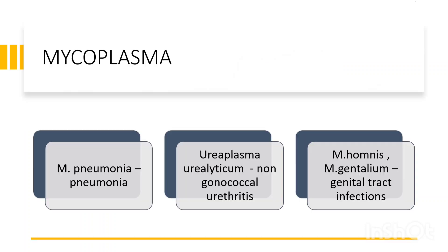Welcome to MBPS Tamil. Mycoplasma is a genus. What causes mycoplasma? Pneumonia. Ureaplasma urealyticum causes endogenous infections. Mycoplasma causes non-gonococcal urethritis. Mycoplasma hominis and Mycoplasma genitalis cause genital tract infections.